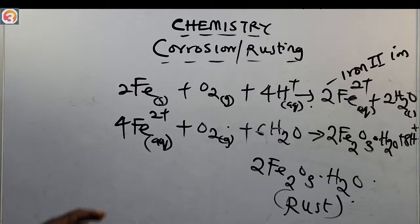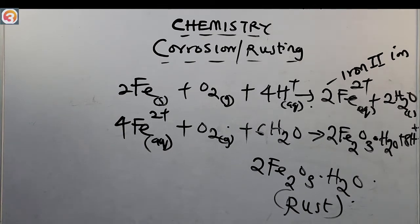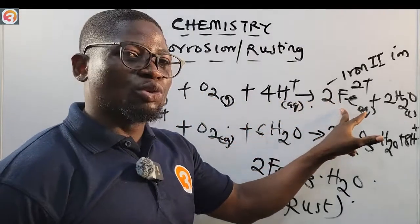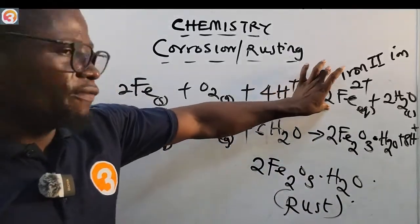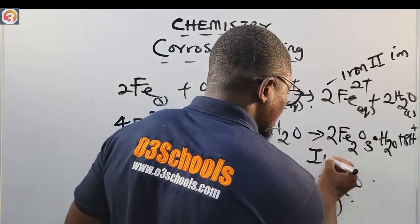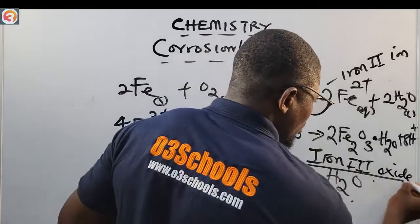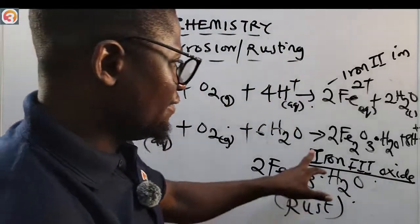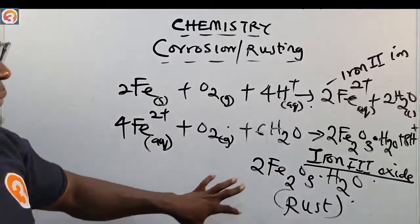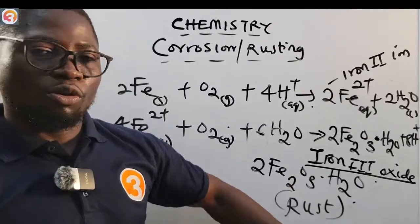So rusting is a degradation process that occurs in the presence of oxygen — that is air — and moisture, that is water. It is important to know that the corrosion of iron is specifically called rusting. So rusting is the corrosion of iron, and we use the term rusting only for iron.